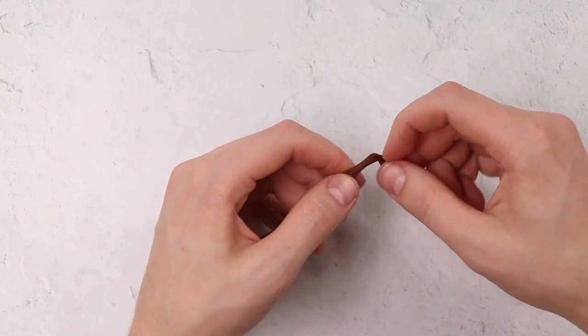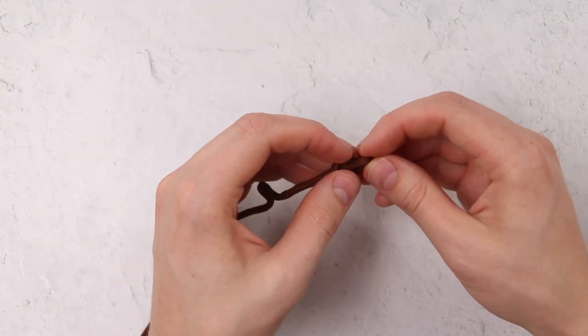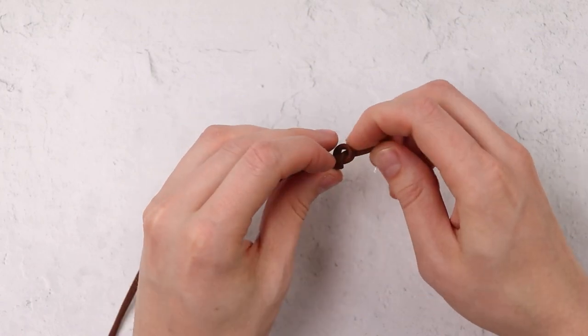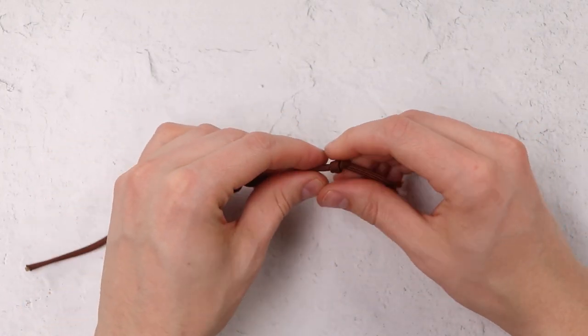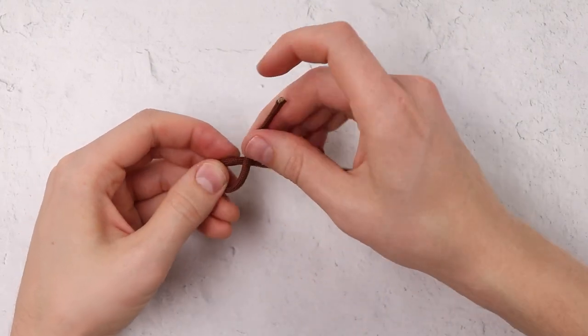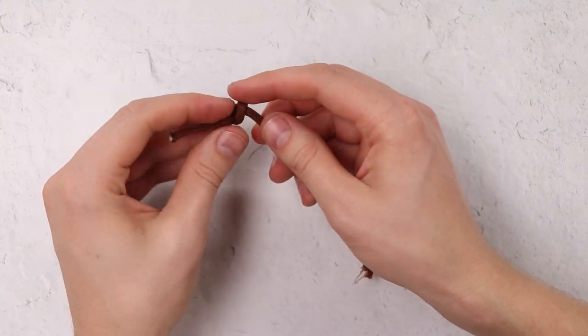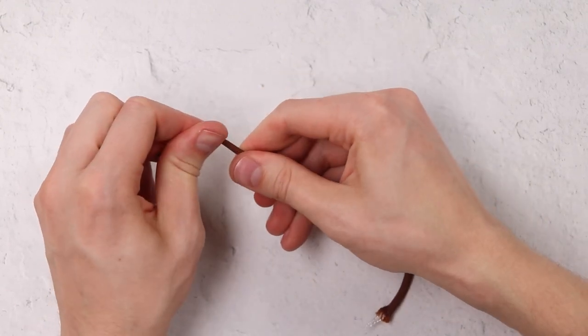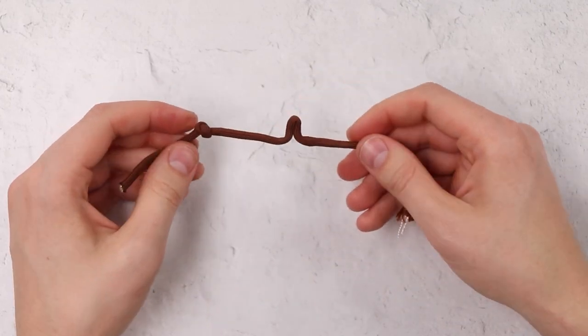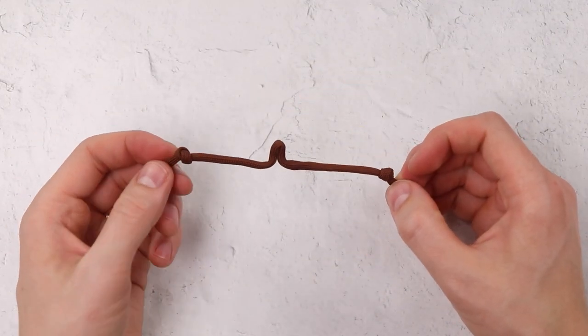Then on each end, we're just going to tie an overhand knot, and that'll keep our wire in place. Cinch that down right at the end of the wire. Do the same thing on the other side. And then you can go ahead and clip your ends off and melt them with a lighter.